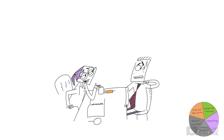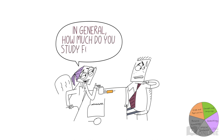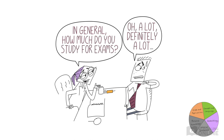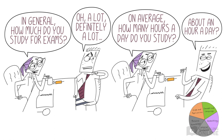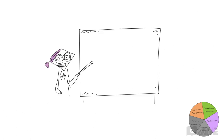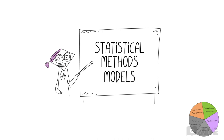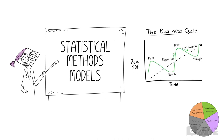For example, if someone asked you, 'In general, how hard do you study for exams?' you might give a different answer than if they asked, 'On average, how many hours do you study every day?' Both questions are looking for the same information, but the first question leads you towards saying that you study hard, even if you don't. Academics in the human sciences will also use statistical methods and models to analyse human behaviour, like graphs that help us understand economic trends.